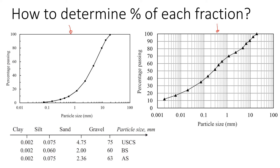In soil mechanics we deal with material that has a combination of different fractions including gravel, sand, silt and clay, and we should remember the boundaries between these fractions. There are different classification systems: the Unified Soil Classification System, the British system, and the Australian system. In this example we're going to use the Australian system.